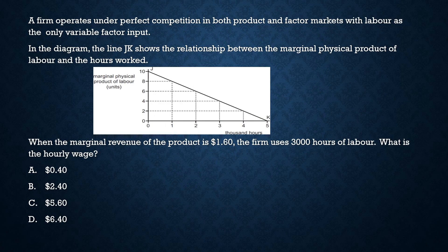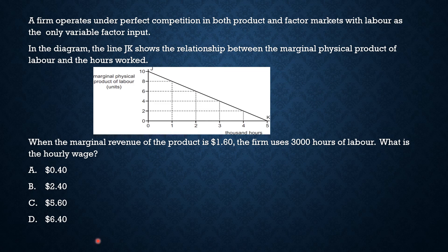The next question: a firm operates under perfect competition in both the product and factor markets, with labor as the only variable factor. The diagram line JK shows the relationship between marginal physical product and labor. The hourly wage rate question asks: when the marginal revenue product is $1.60 and the firm uses 3,000 workers, what is the hourly wage rate? You calculate using marginal physical product multiplied by marginal revenue — at 3,000 employees, the marginal physical product is approximately 4.